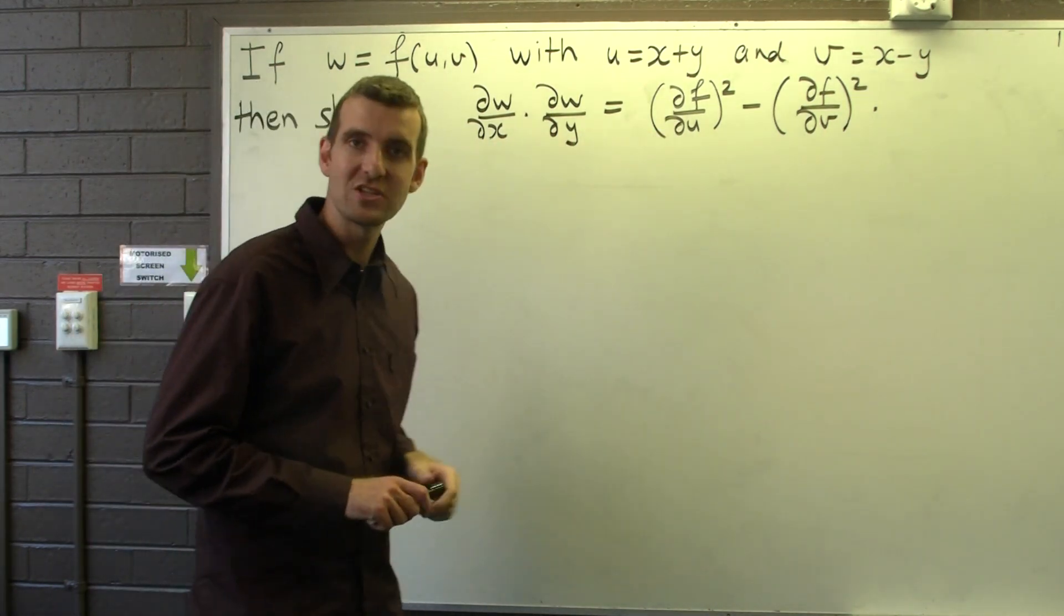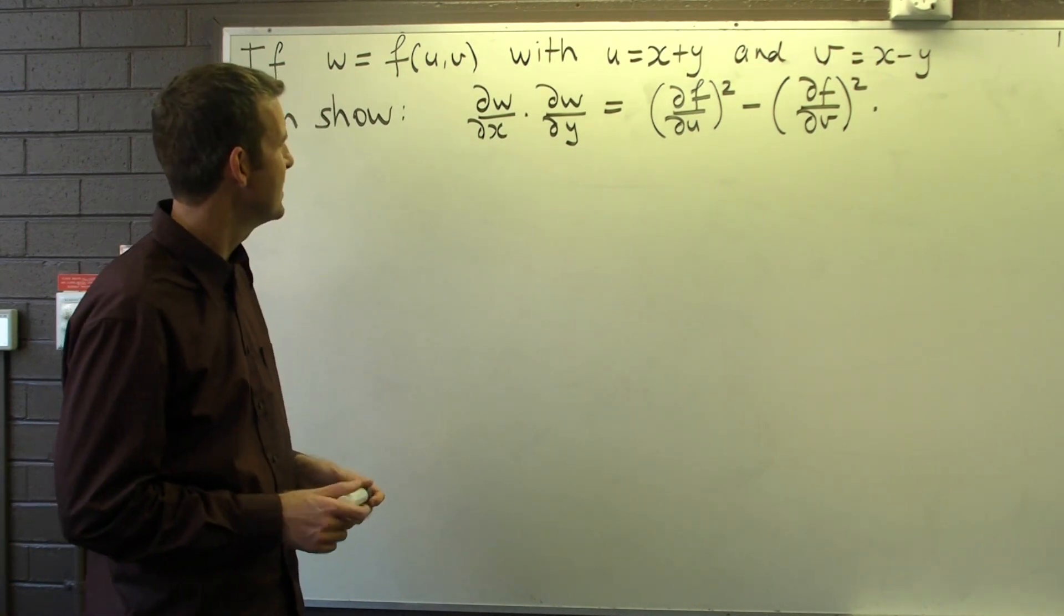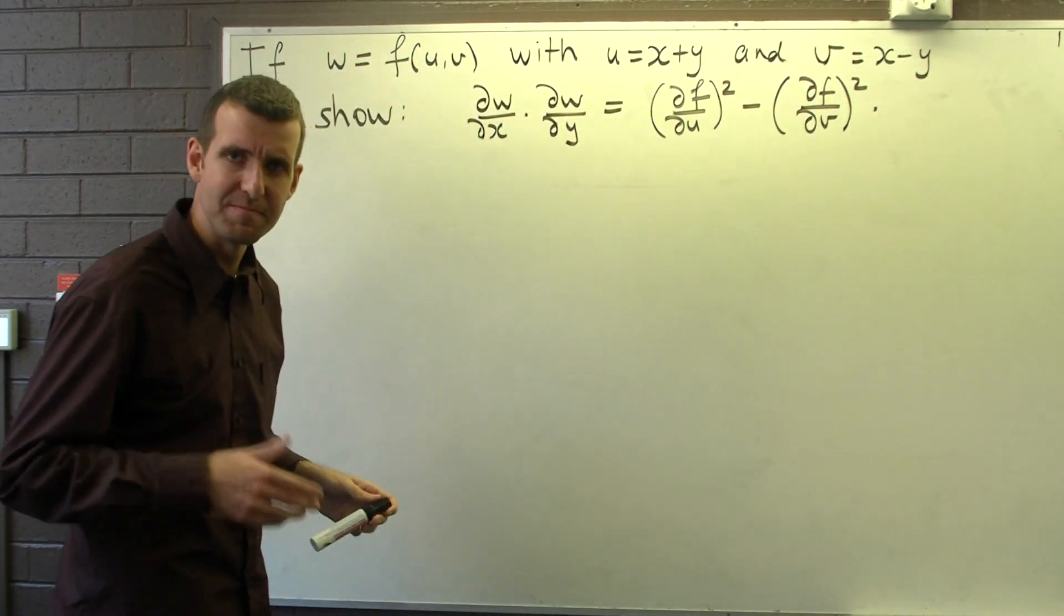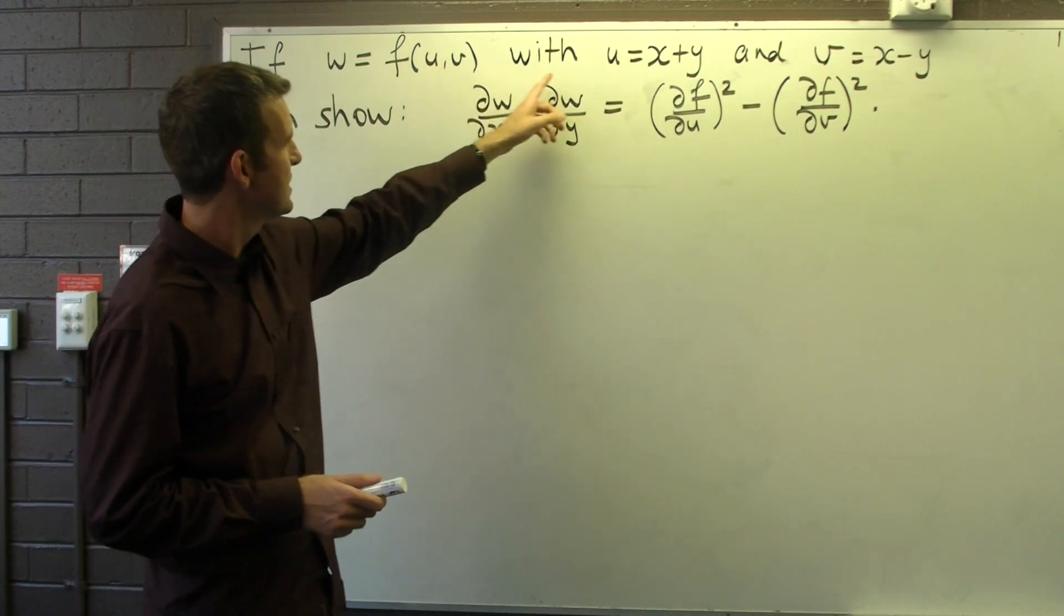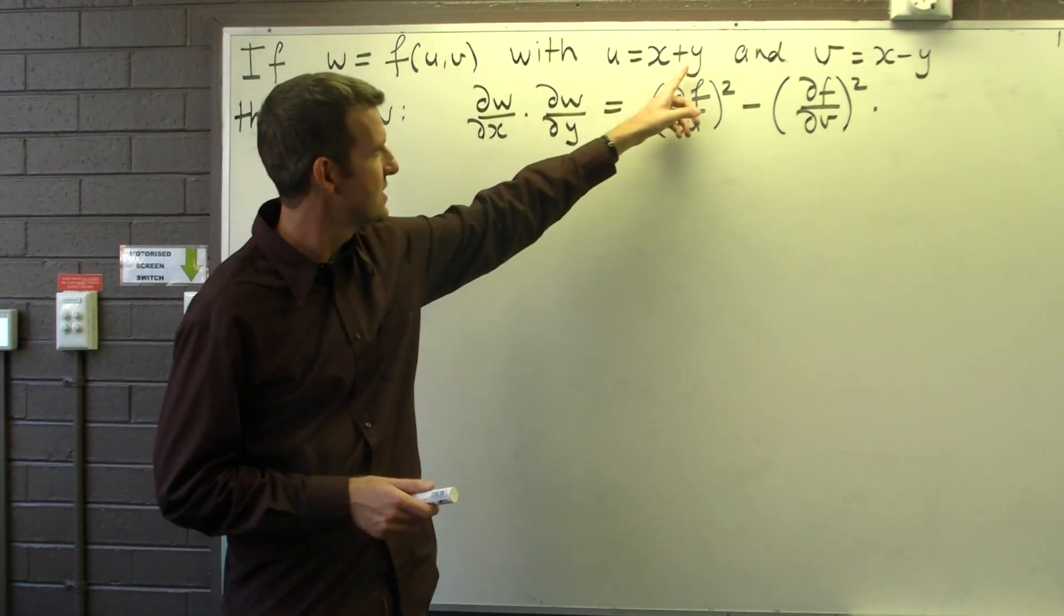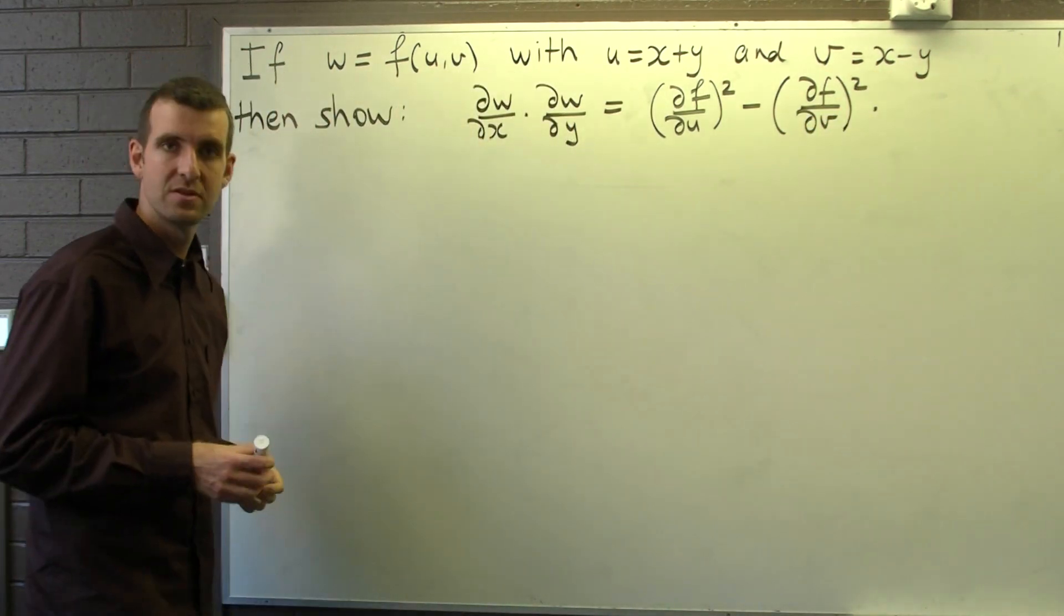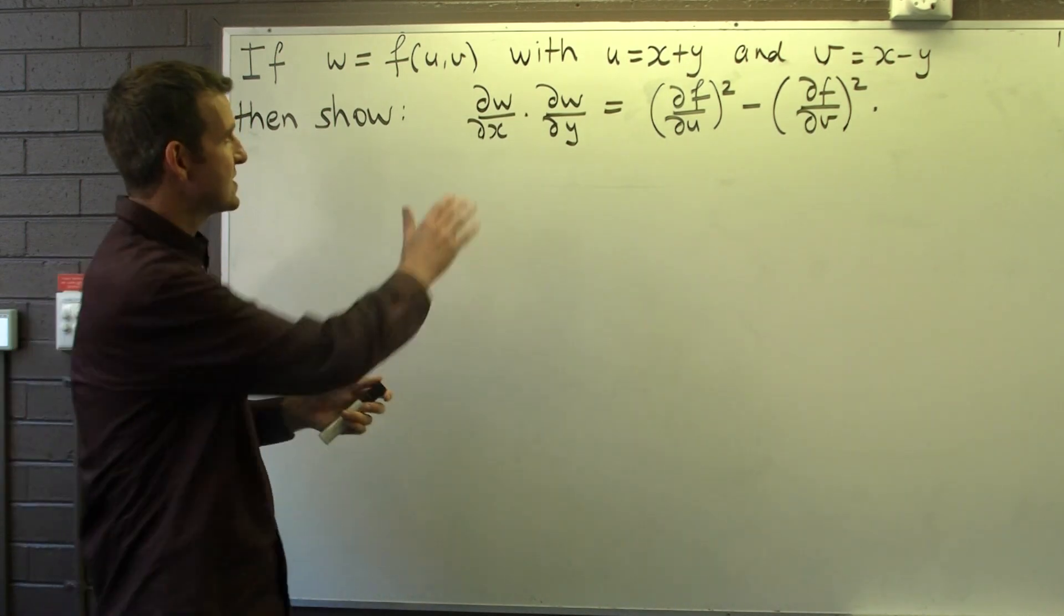But how do we do that? Well, if you look at our particular setup, we have a composition of functions. Okay, so u depends on x and y, v depends on x and y, and f depends on u and v. Now this is a prime example where you see this composition to employ and apply the chain rule.